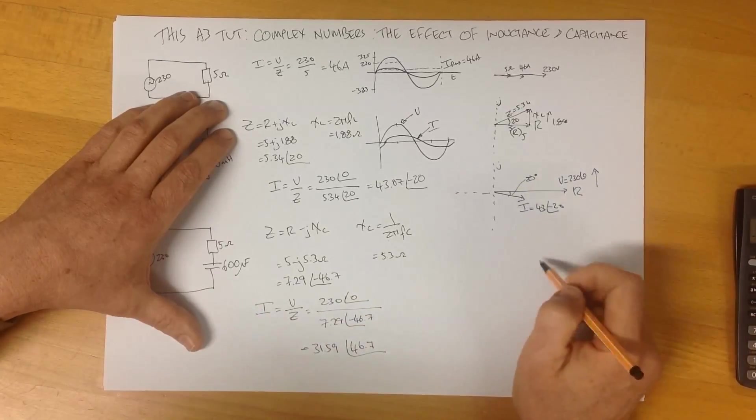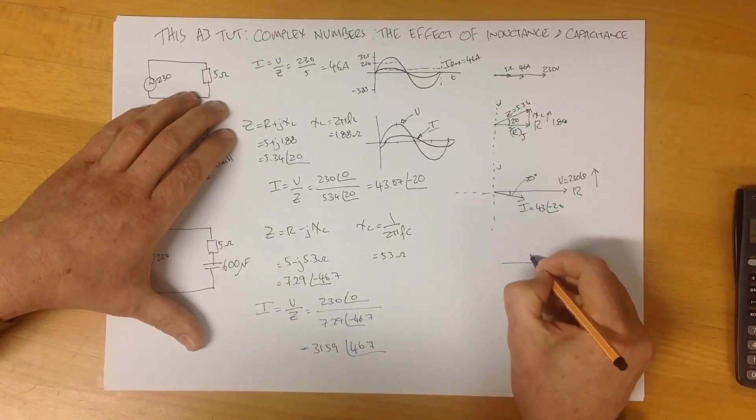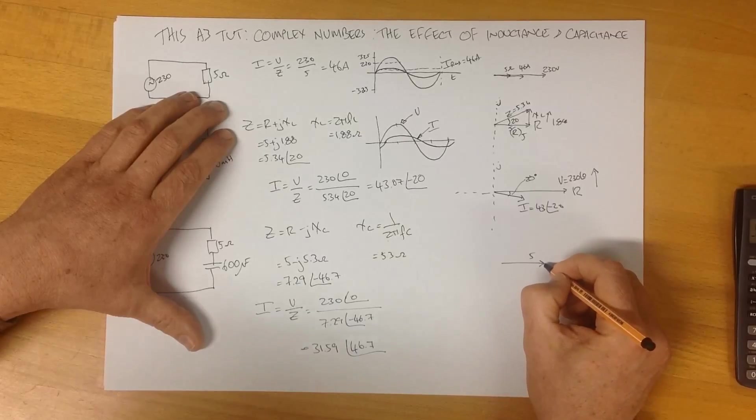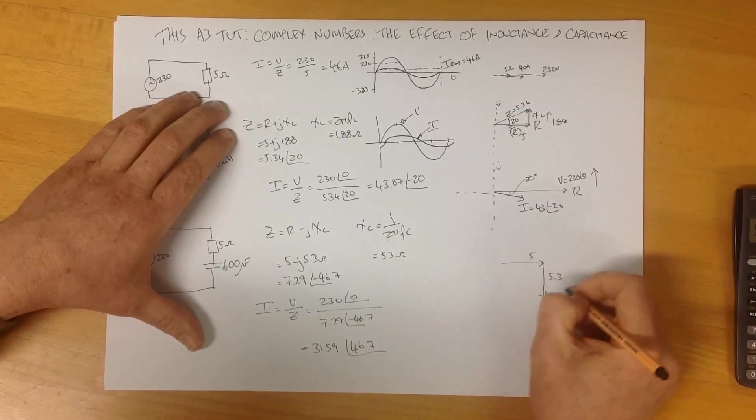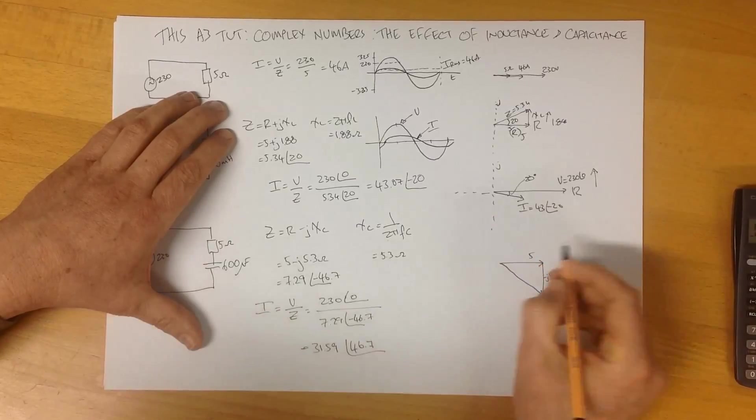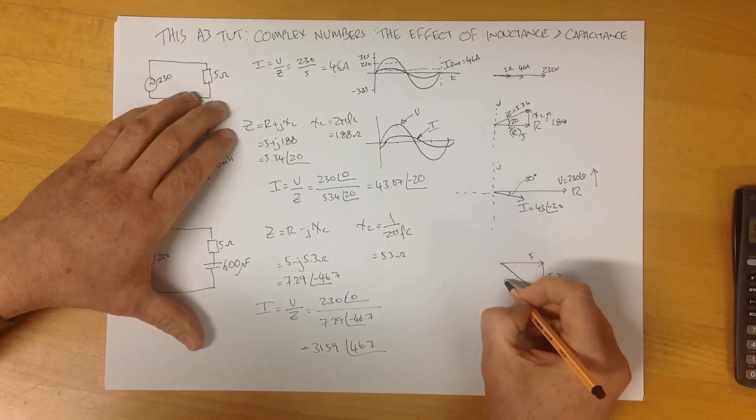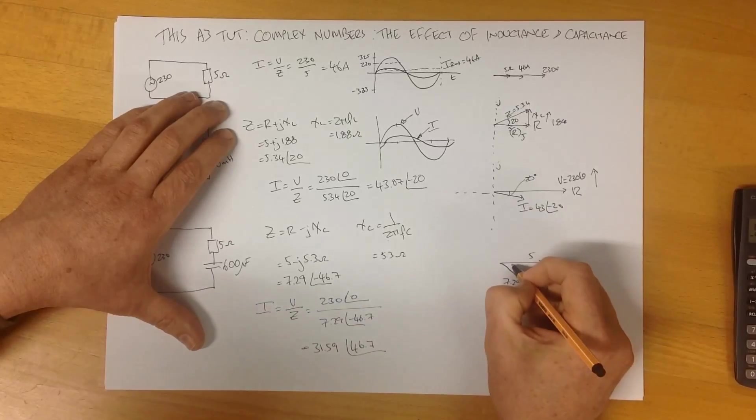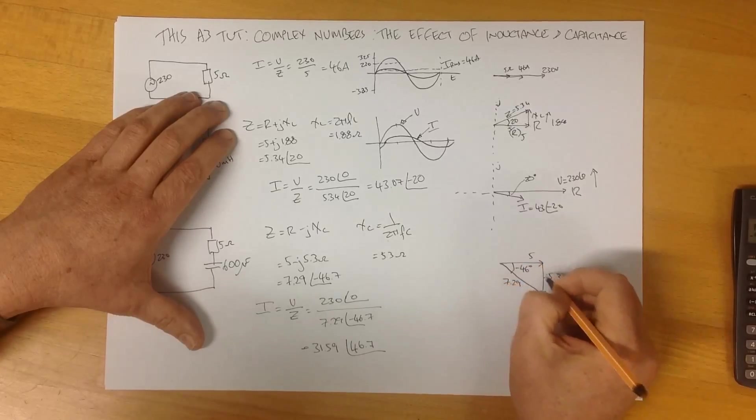If we look at our load, we have our pure resistive load of 5. We have an inductive component down here of 5.3. On our triangle, here's our 7.29 at an angle of minus 46 degrees.